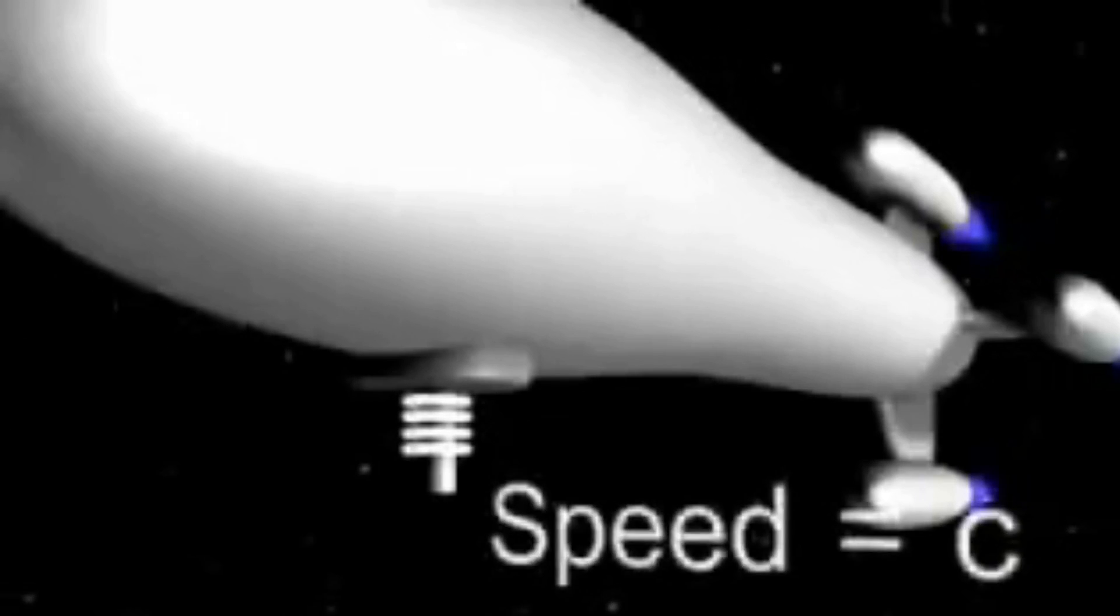This is because the object's length is compressed by the motion. Time dilation. Clocks moving at high speeds will appear to run slower than clocks that are not moving with them. This is because the clock's rate of time is slowed down by the motion.